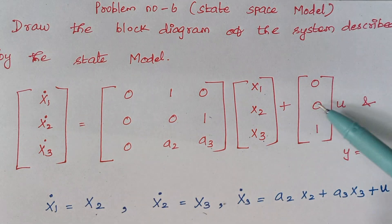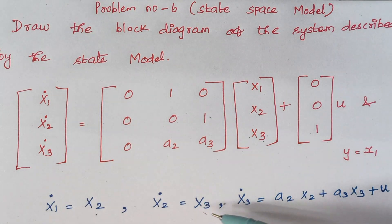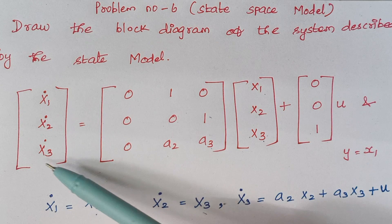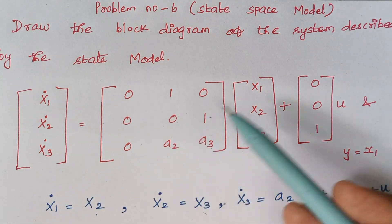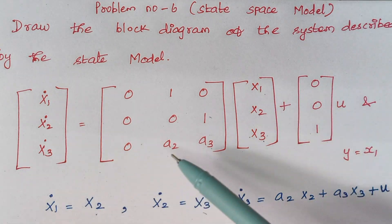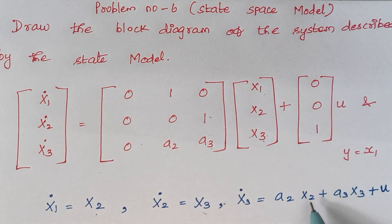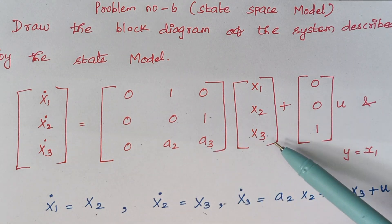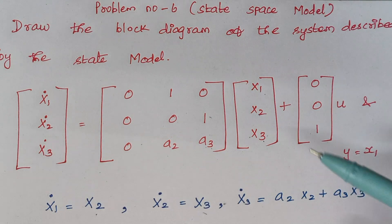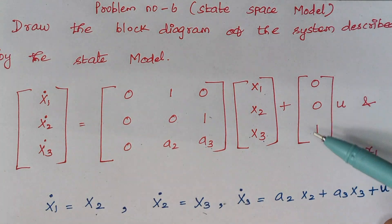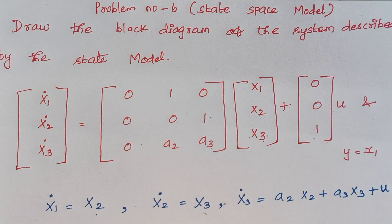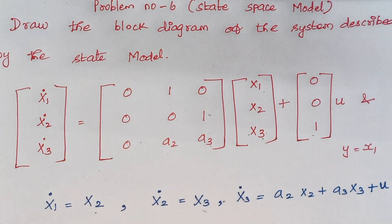Since the value of u is 0, no u appears in x2_dot. Finally, looking at the row for x3_dot: 0 into x1 is 0, a2 into x2 is a2*x2, plus a3 into x3 is a3*x3, and here we have 1, so 1 into u gives u. So this completes our first step of framing the expressions from the given state model.